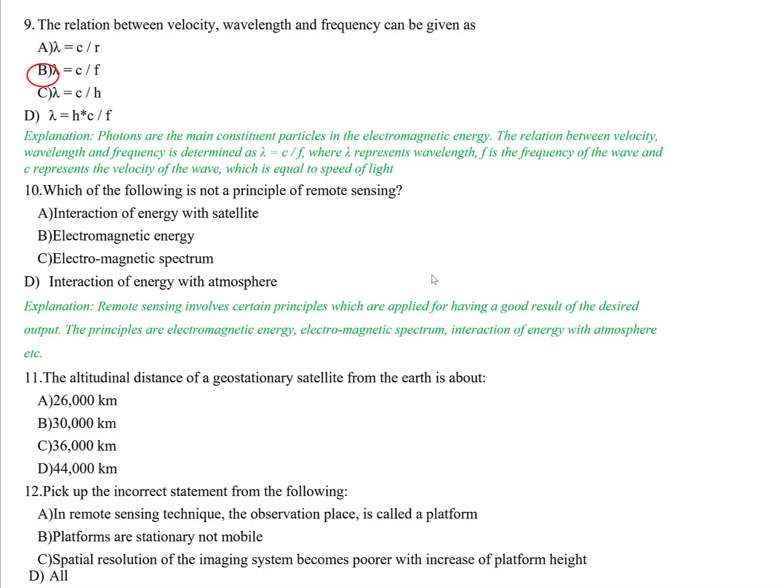Question ten: Which of the following is NOT a principle of remote sensing? The options are: interaction of energy with the satellite, electromagnetic energy, electromagnetic spectrum, and interaction of energy with the atmosphere. The correct answer is interaction of energy with the satellite — this is not a principle of remote sensing. The actual principles are electromagnetic energy, electromagnetic spectrum, and interaction of energy with the atmosphere.